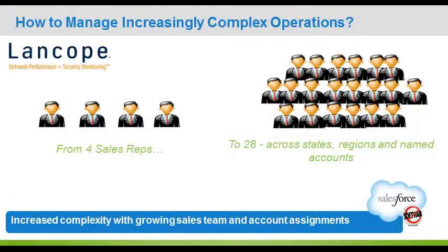When we had fewer sales representatives, it was a little easier to maintain — still kind of cumbersome — but we are now working with 28 sales representatives in various territories, and that territory can be defined as either by state, or in some cases a single state is split either alphabetically or by area code. We also have a couple of sales representatives that have NAIS accounts, so we have to make sure that if we're transferring records in a specific state from one rep to another, that we don't move the named accounts as well.